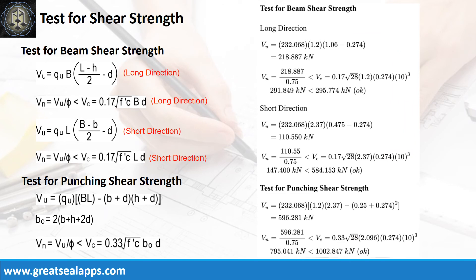The factored beam shear force at long direction is 218.887 kN; the nominal force is 291.849 kN, less than the concrete capacity of 295.774 kN. The factored beam shear force at short direction is 110.55 kN; the nominal force is 147.4 kN, less than the concrete capacity of 584.153 kN. The factored punching shear force is 596.849 kN; the nominal force is 795.041 kN, less than the concrete capacity of 1,002.847 kN.